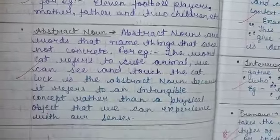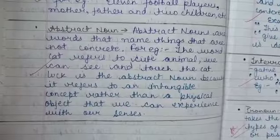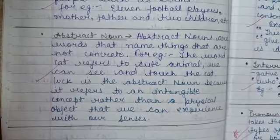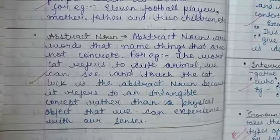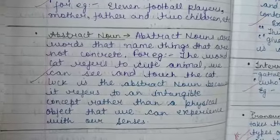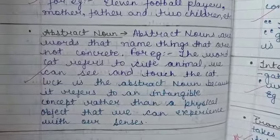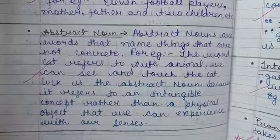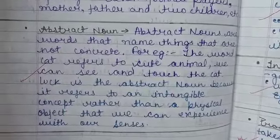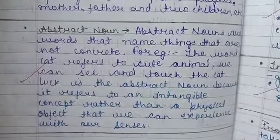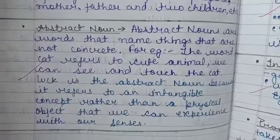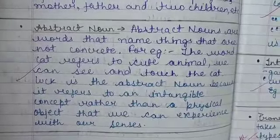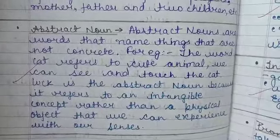Now we are going to talk about abstract nouns. Abstract nouns are words that name things that are not concrete. For example, the word 'cat' refers to a cute animal — we can see and touch the cat. But 'luck' is an abstract noun because it refers to an intangible concept rather than a physical object that we can experience with our senses.